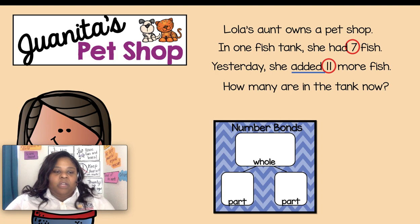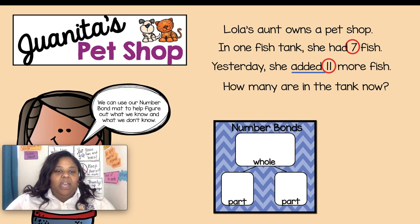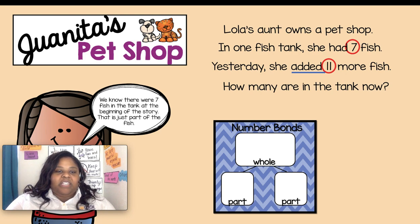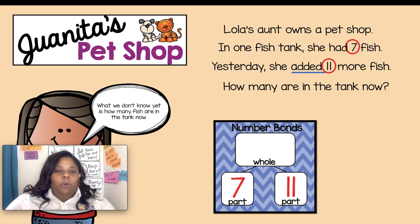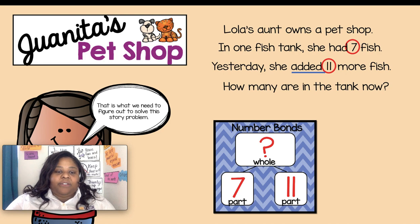All right, let's use our number bond. We can use our number bond mat to help us figure out what we need to know and what we don't know. We know that there are seven fish in the tank at the beginning of the story — that is just part of the fish. We also know that she added 11 more fish — that is the other part of the total number of fish in the tank. What we don't know yet is how many fish are in the tank now. That is what we need to figure out to solve this problem.